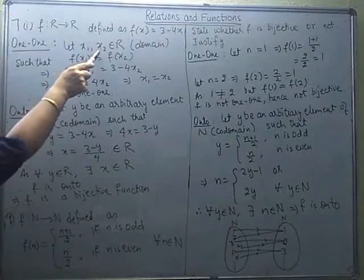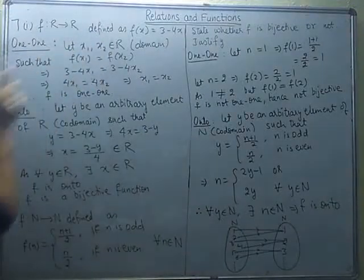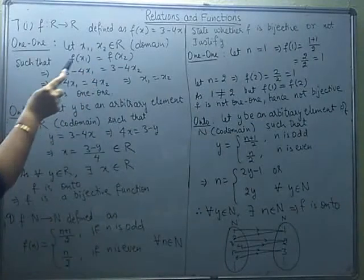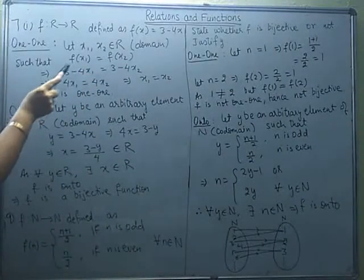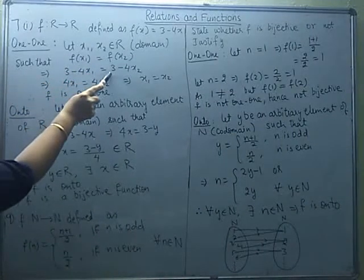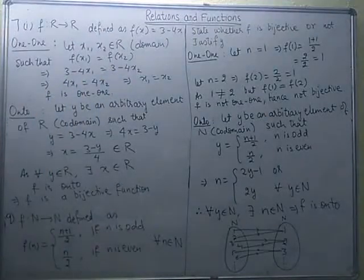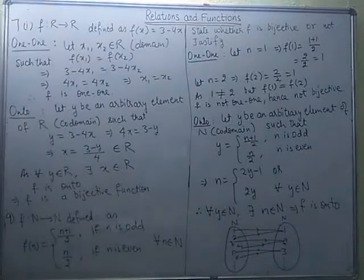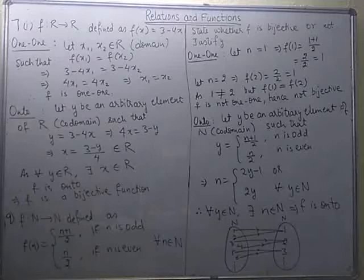Taking any two elements from the domain, which is the set of real numbers, such that their images are equal: the image of x1 is 3 minus 4x1, and the image of x2 is 3 minus 4x2. On simplification, this gives us x1 equals x2. So f is one-one, and the first condition is fulfilled.